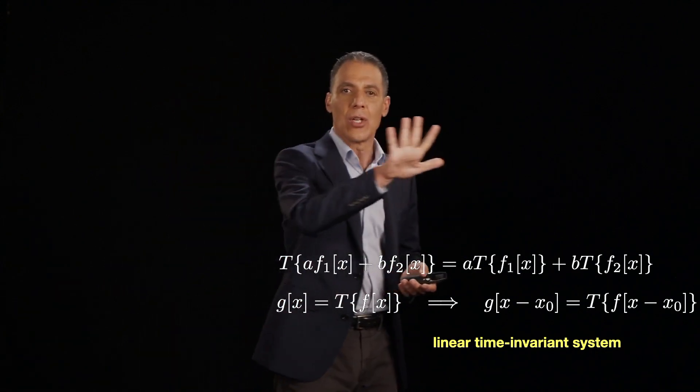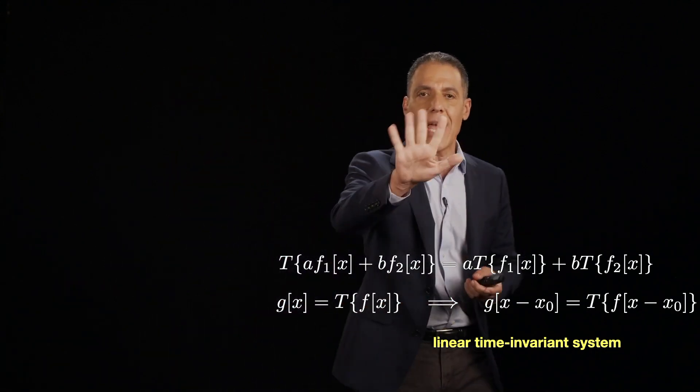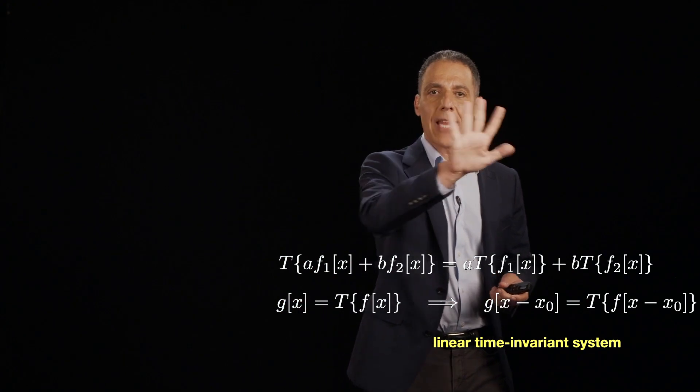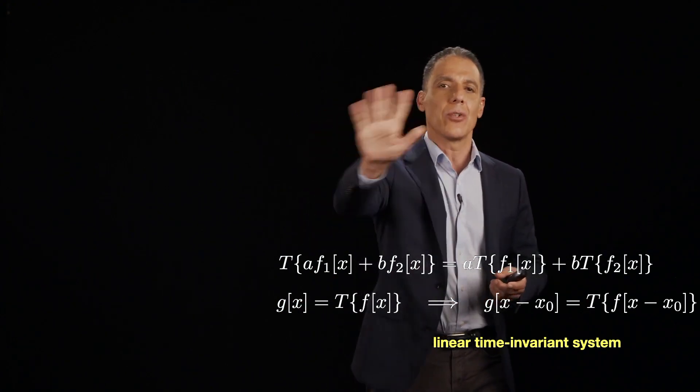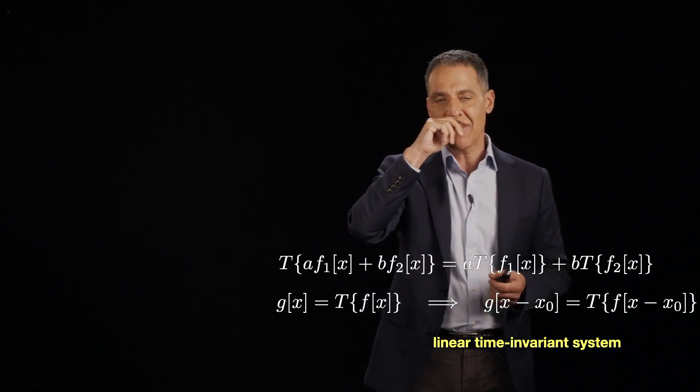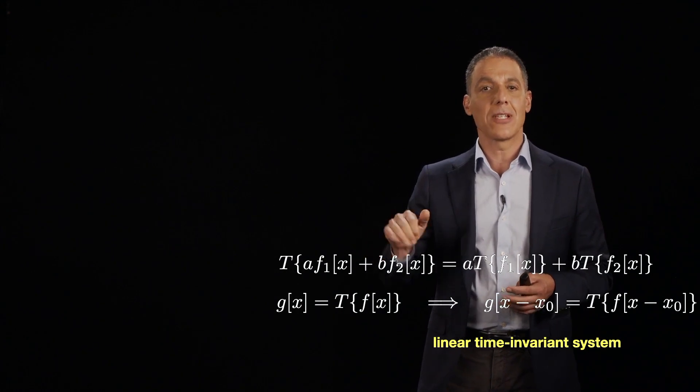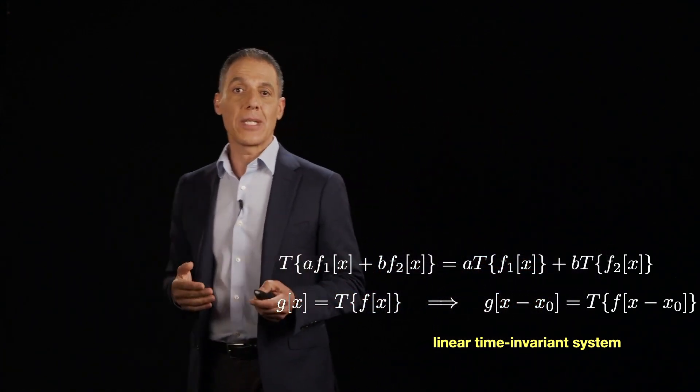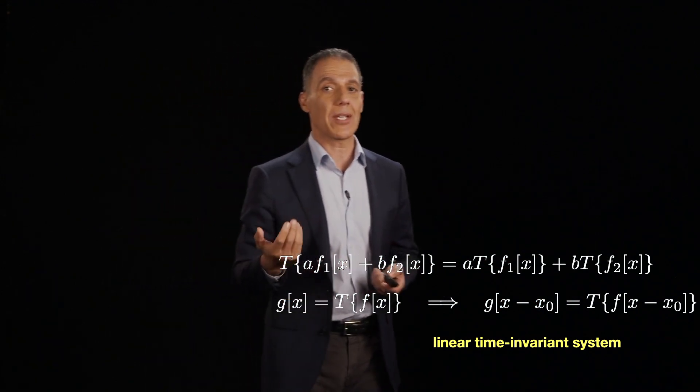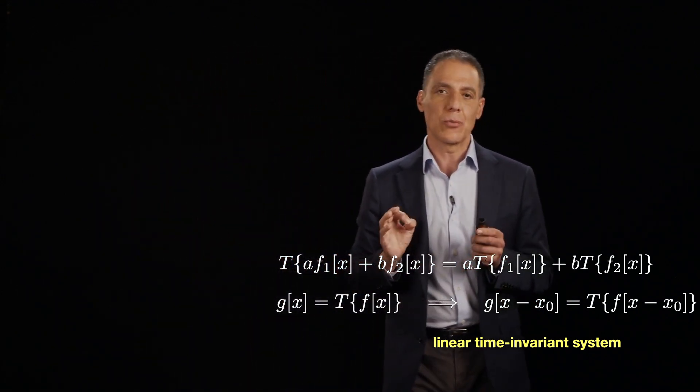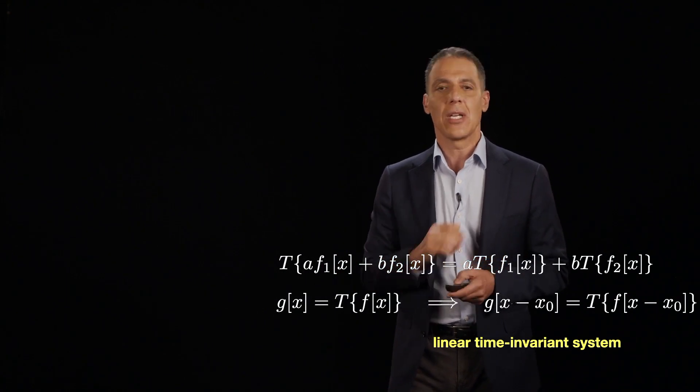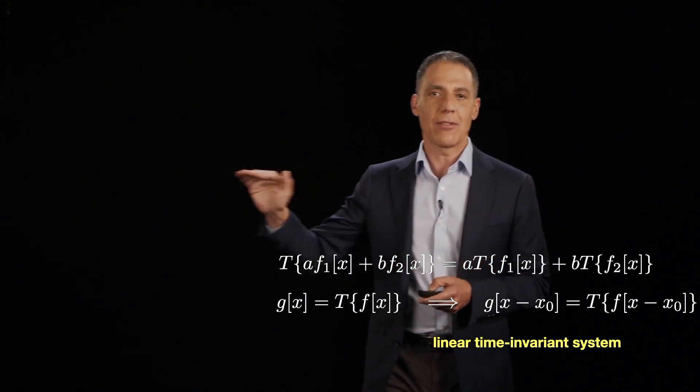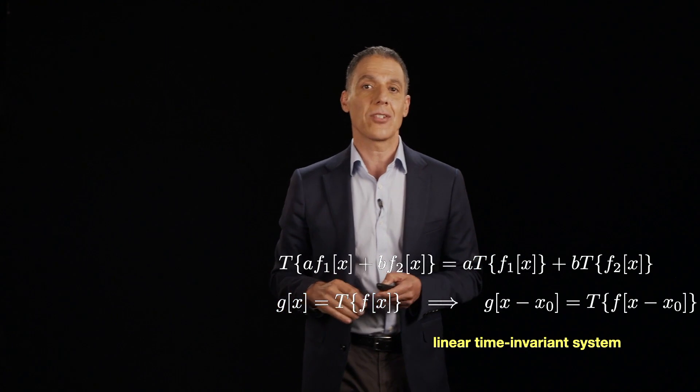It means the system doesn't care where the signal is aligned. Put any signal in there and get an output, shift the signal, you'll get the output shifted. So these two properties, linear and time invariant system, are very special. And they're special because lots of different systems happen to have linear and time invariants, and they lead to a really important concept, as I said earlier, to almost everything that comes next. So let's see why.